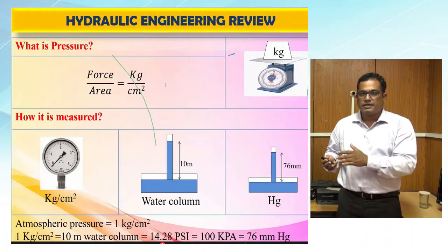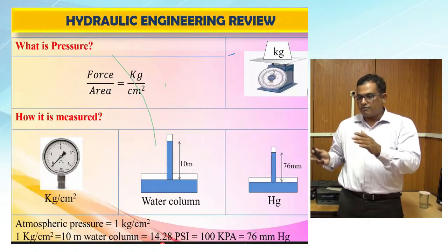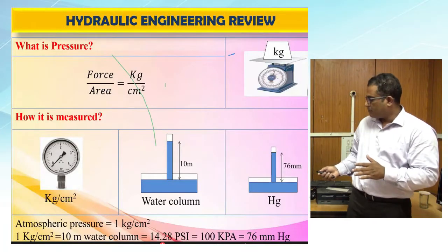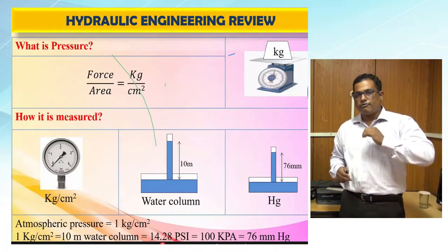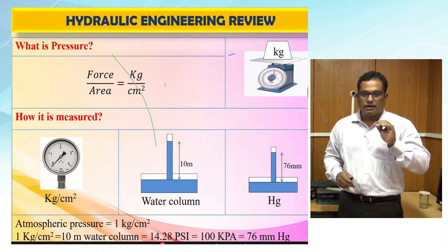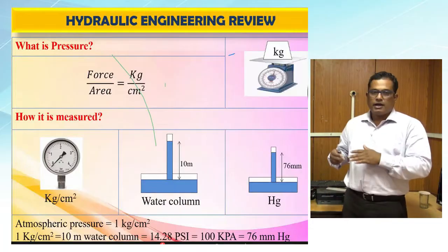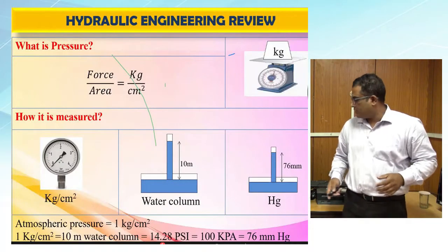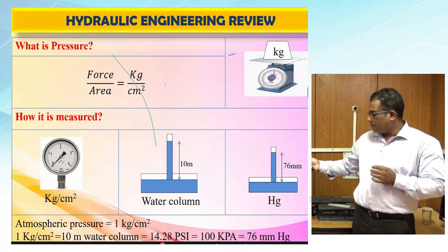For gravity drip irrigation systems, the tank must be elevated at least 10 meters to achieve 1 kg per cm² pressure. If that height is not available, emitter and lateral types suitable for lower pressures must be selected, though these are best suited for small plots. With 1 kg per cm², a 12 mm or 16 mm lateral will deliver the design discharge consistently regardless of pressure variation.